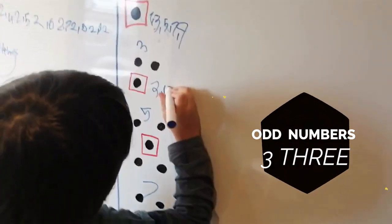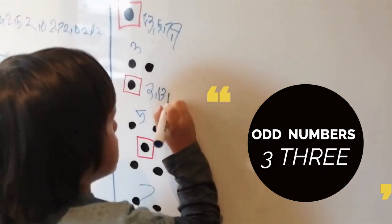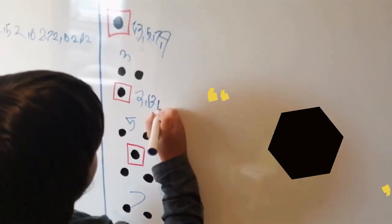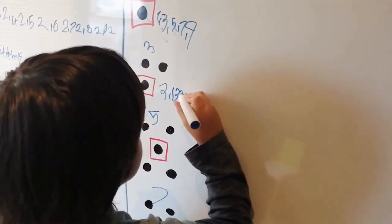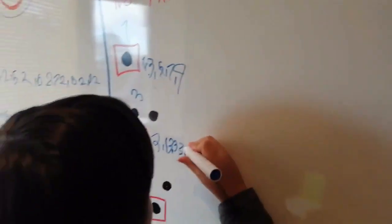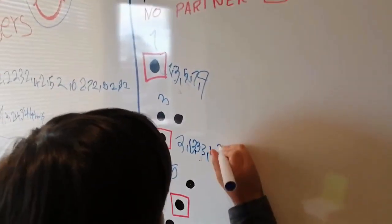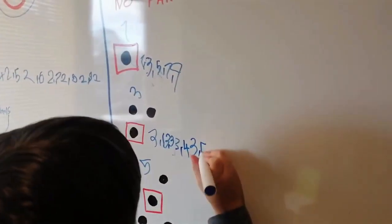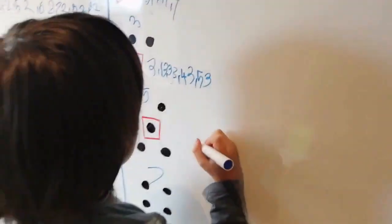Next is three: three, thirteen, twenty-three, thirty-three, forty-three, fifty-three, that's good.